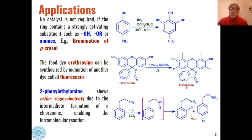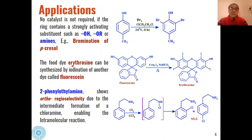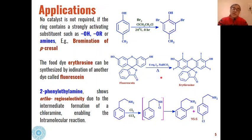This is how one type of dye — fluorescein — is converted into another dye, erythrosine. Erythrosine is used in many types of food articles, which is why it is called a food dye. It can be simply synthesized from fluorescein by electrophilic aromatic iodination, making this a very important application of this reaction.